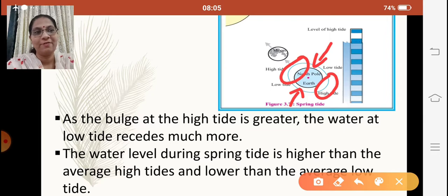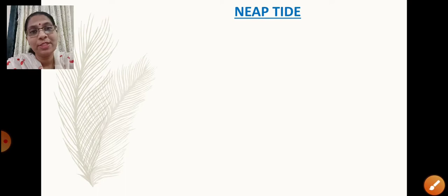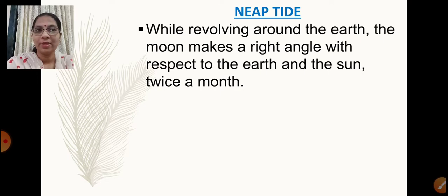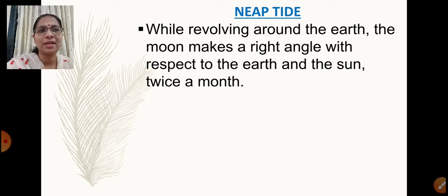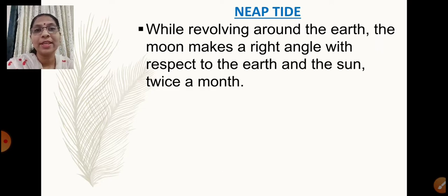Now we will learn about neap tides. While revolving around the earth, the moon makes a right angle with respect to the earth and the sun twice a month — that is, during the first quarter and the third quarter. On the new moon day and full moon day they are in a straight line, while in the first and third quarter the sun, earth, and moon make a right angle to each other. This occurs twice a month.